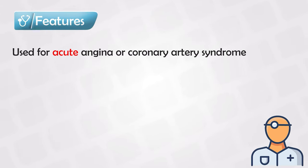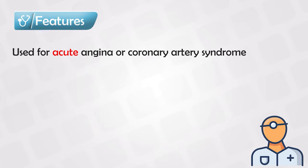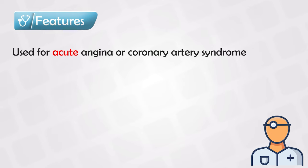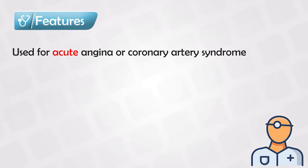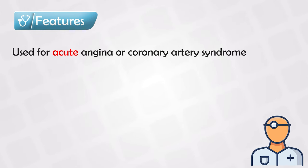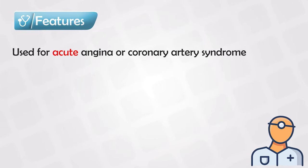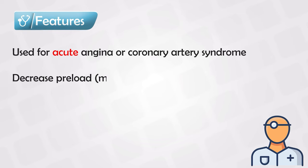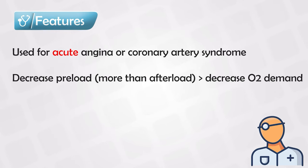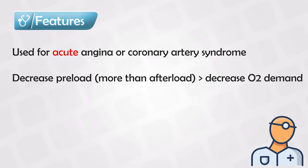Nitrate products are mainly used for acute angina or acute coronary syndrome. They can relax the heart and decrease oxygen demand. However, their main effects stem from dilation of the large arteries and not the small arterioles. While they do cause some dilation in the coronary arteries, most of their action affects larger vessels — decreasing oxygen demand by reducing preload, and at higher doses, also decreasing afterload.